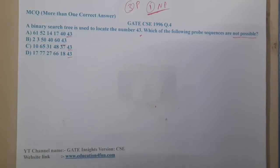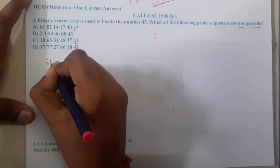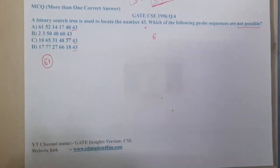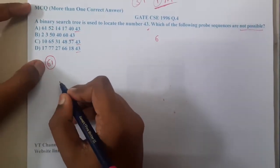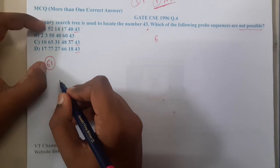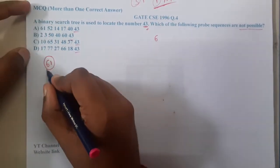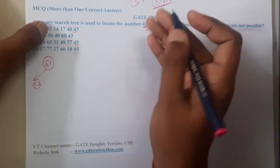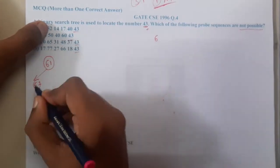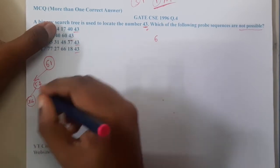So first, your root is 61. Please concentrate — it is a really easy problem, and you can get one or two marks easily. So at 61, you are in search of 43, which means you should decrease your value, so you went to 52 next. After 52, 43 is still less, so you need to go further left, and you went to 14.